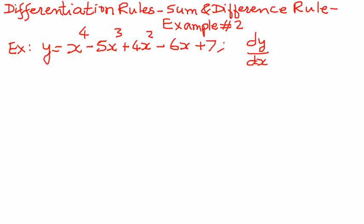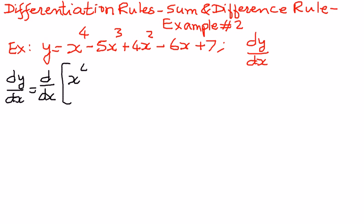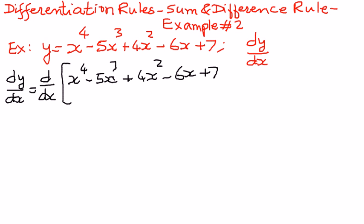So the way to solve this function is as follows. dy by dx is going to be equal to — we can write this as d by dx of the whole function: x to the power of 4 minus 5x to the power of 3 plus 4x to the power of 2 minus 6x plus 7.